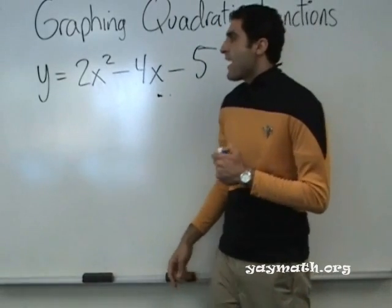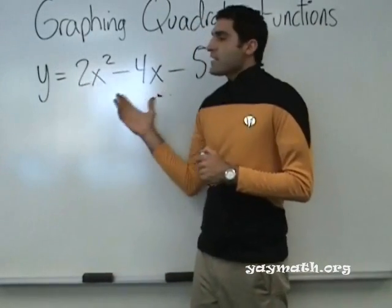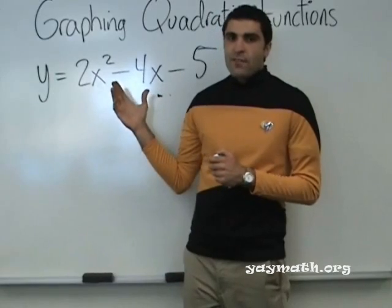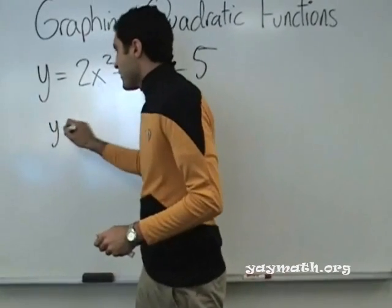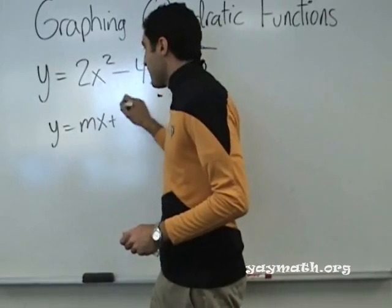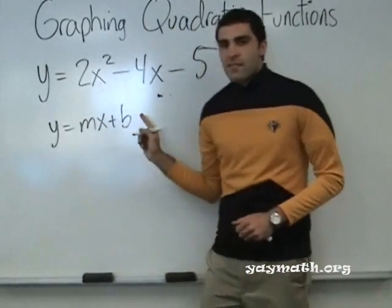The reason we can tell it's a parabola is that the X value is squared. Remember, in graphing a line, when we graphed a line, it was Y equals MX plus B. This is a line, right? Yes. It's a line.